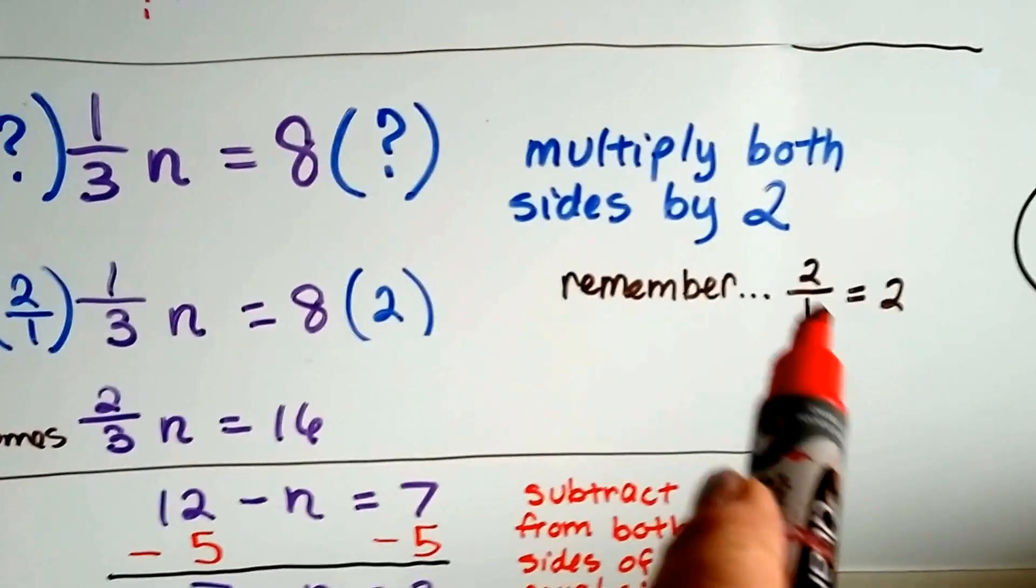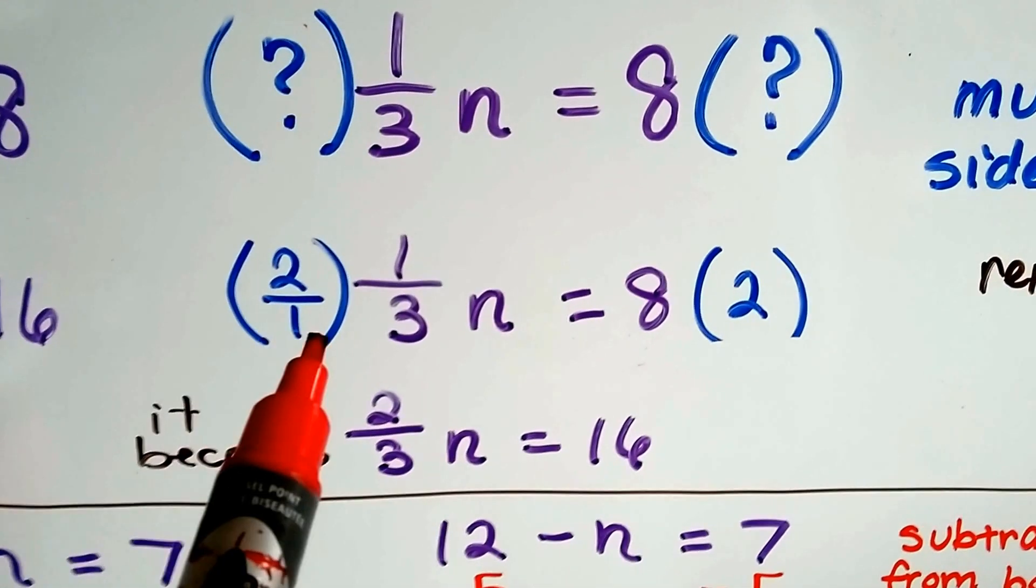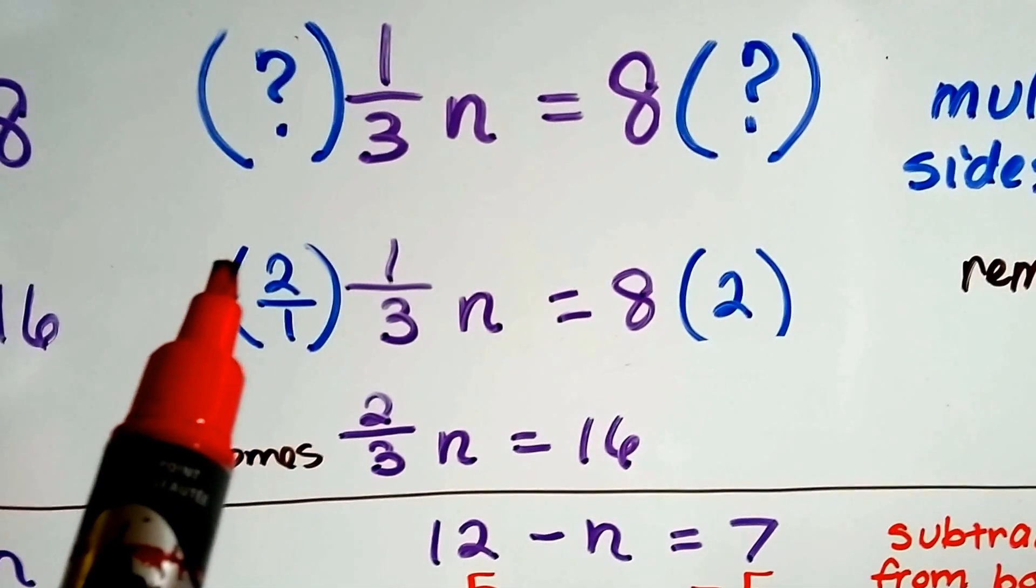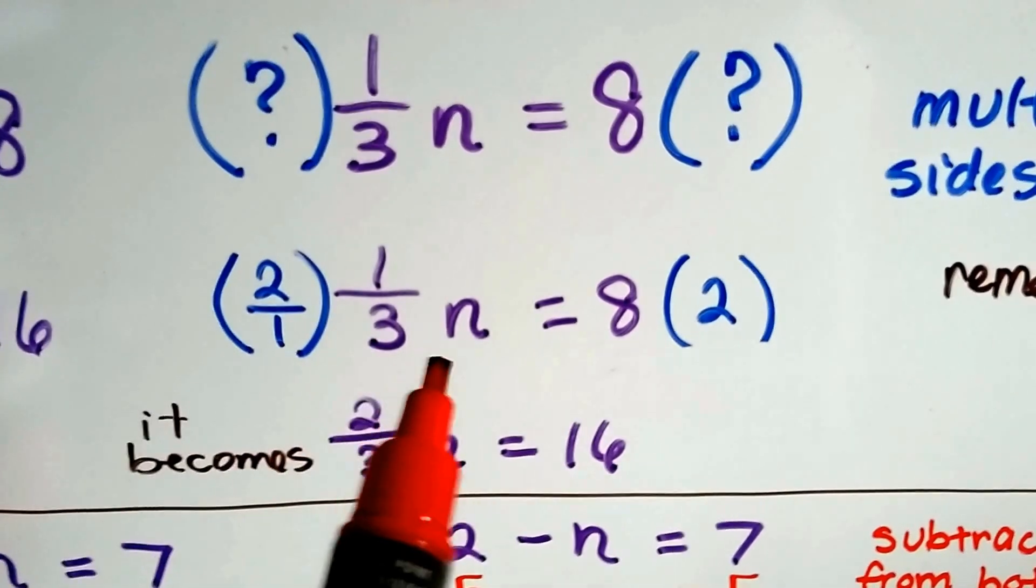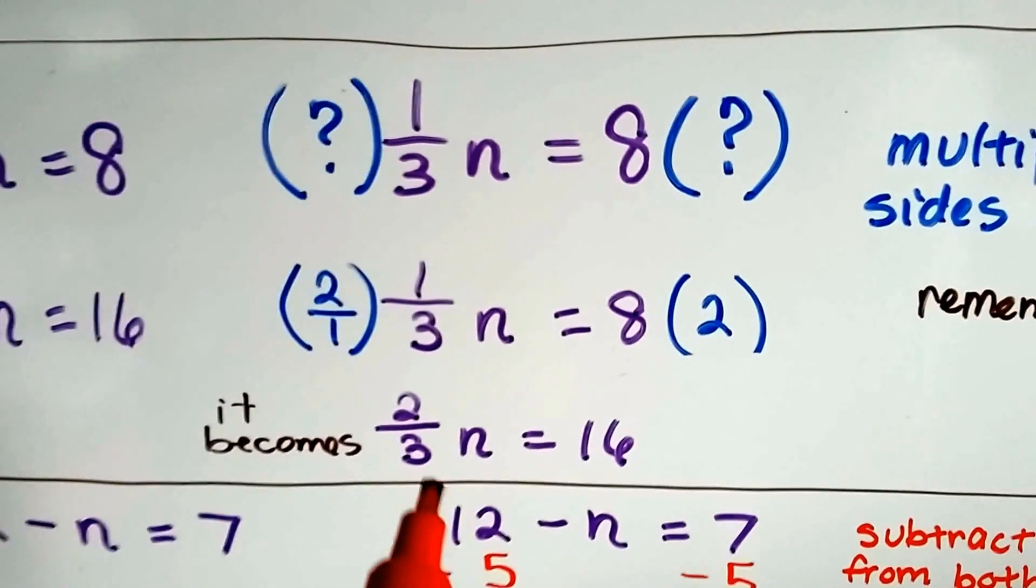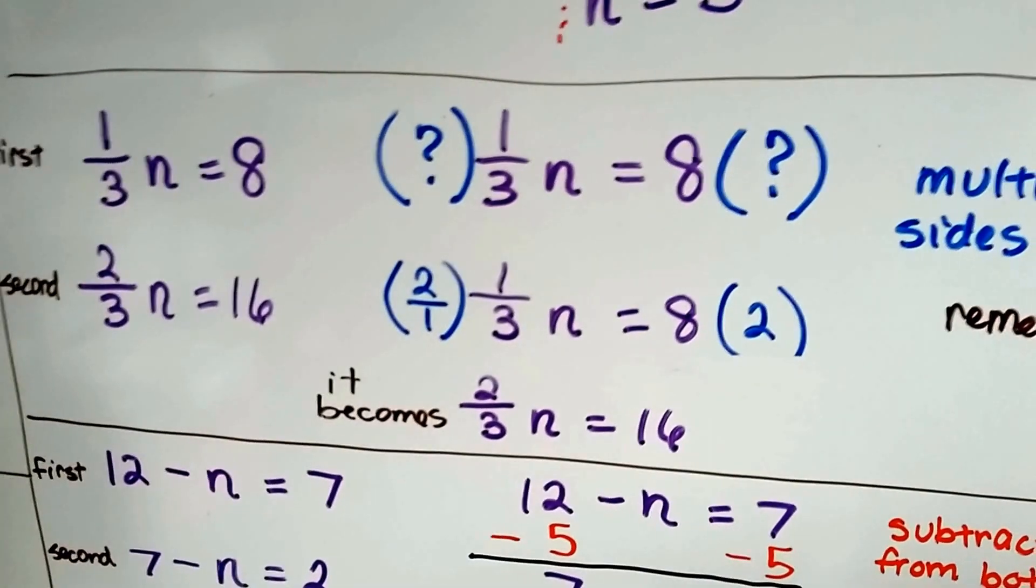You remember that 2 over 1 equals 2 as an improper fraction. I like to do that when I multiply fractions because then I can just go straight across and straight across. So we have 2 over 3, we have 2 thirds. And the 8 times 2 becomes 16. Now we've got 2 thirds n equals 16 and we got to the second equation.